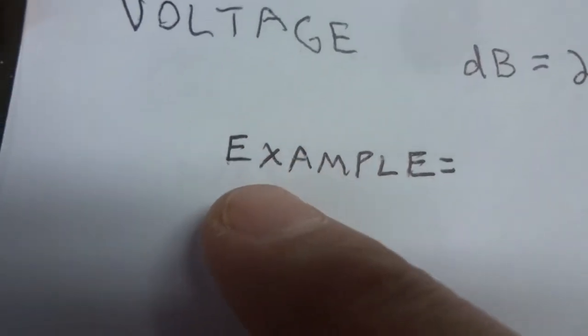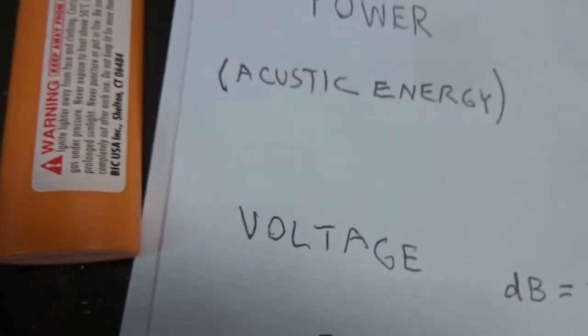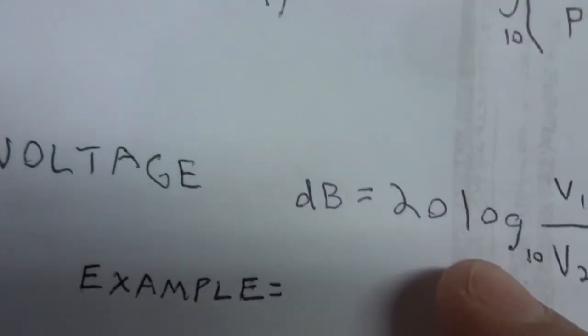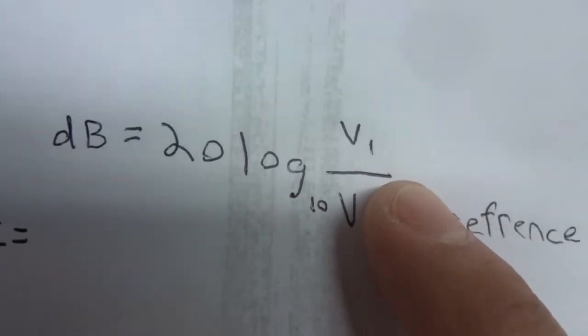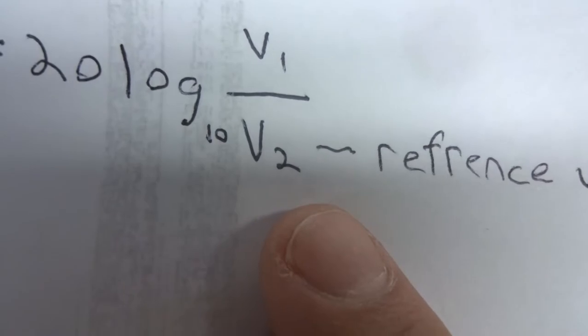So let's go to voltage. I'll try to make this fast so I don't bore you. Voltage is 20 times the log base 10 of the output voltage divided by the input voltage, which could be the reference voltage.